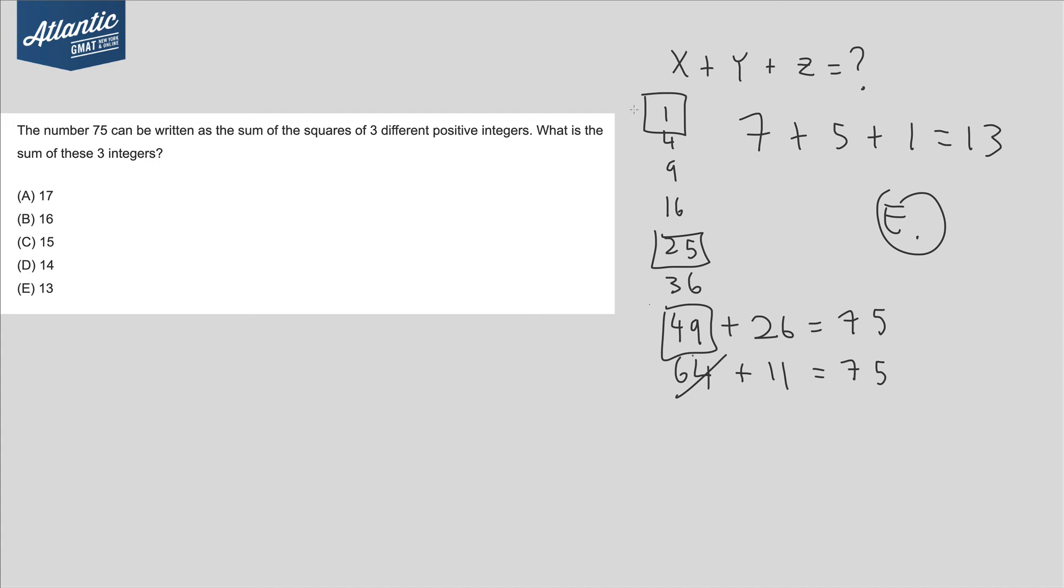Focus on constraints to make your follow-through easier. In this case, we knew that the sum of the three numbers had to be 75, so that ruled out a bunch of things and also helped guide our starting point. Because we were looking for 75, it was easier to start with the bigger numbers that would fill up more of that 75, and then we just had to figure out what the leftover pieces had to be.